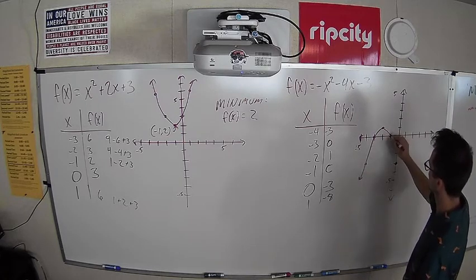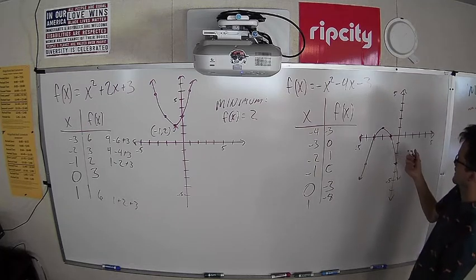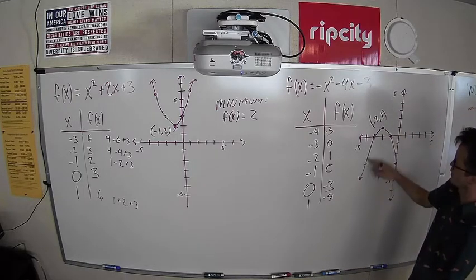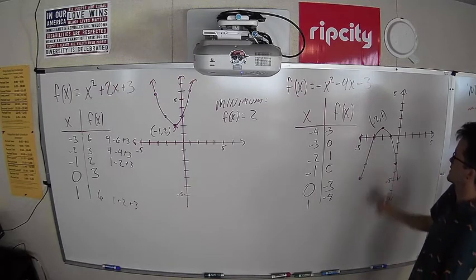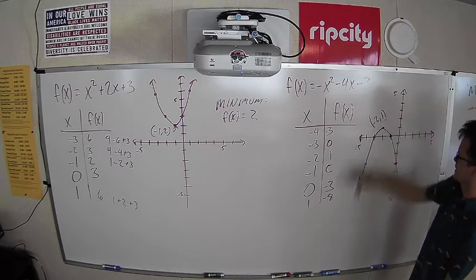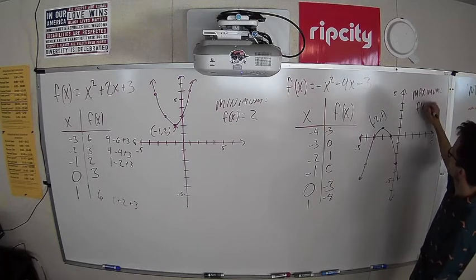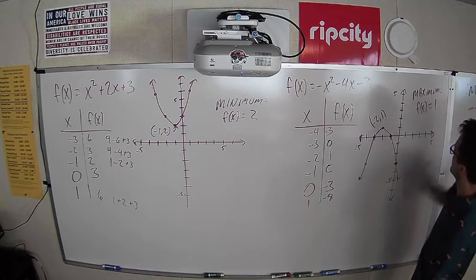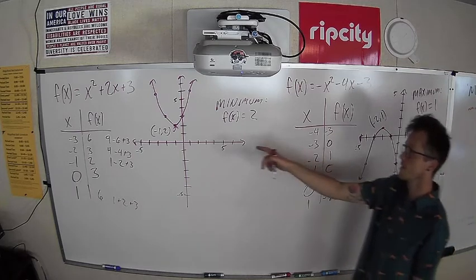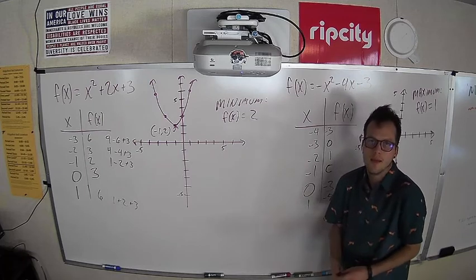It looks like we have crafted ourselves a frowny face. That first one points up like a smiley; this one points down like a frown. So we'd say this one has a vertex of (-2, 1) — that's where this thing turns around. In this case, the whole thing is opening downwards, so we hit the ceiling — we'd say our maximum is when f(x) equals 1. That's as high as this function will ever go. It goes downwards forever, so it doesn't have a minimum. Just like the first one doesn't have a maximum, this one is never going below f(x) = 2.